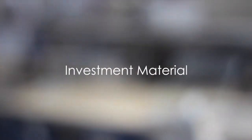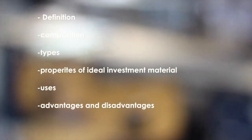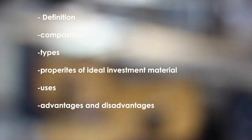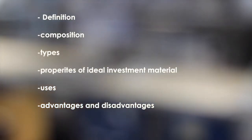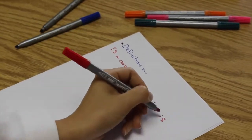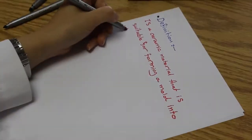In this video we will talk about investment material. We will be covering the definition, composition, types, properties of ideal investment material, uses, advantages and disadvantages. An investment material can be described as a ceramic material that is suitable for forming a mold into which metal or alloy is cast.